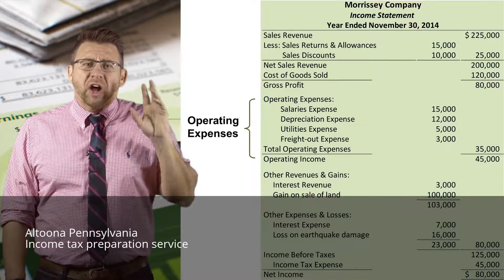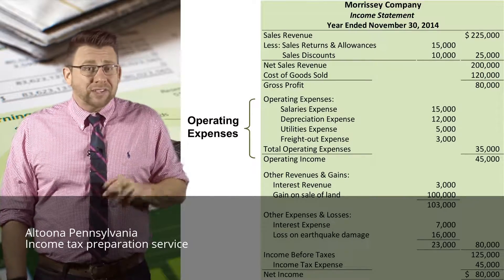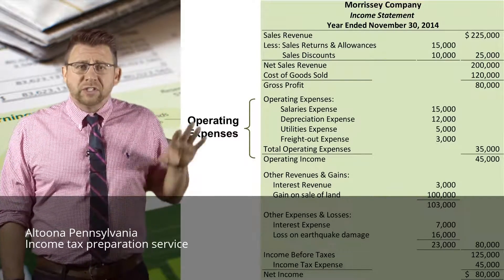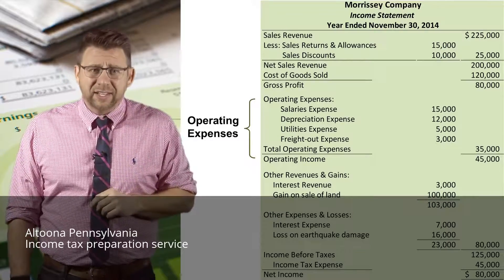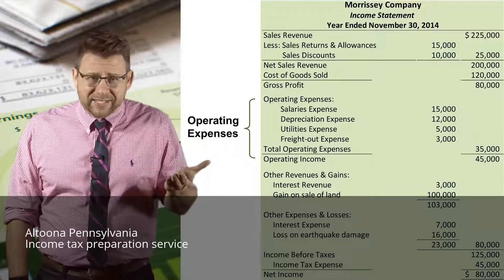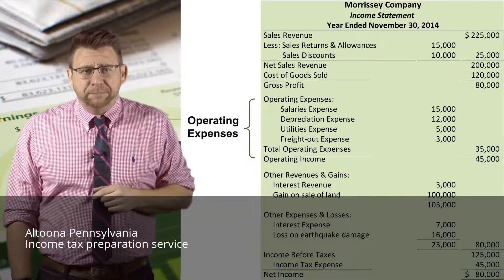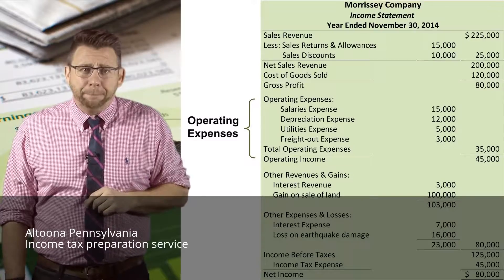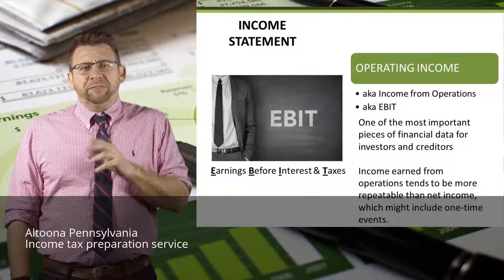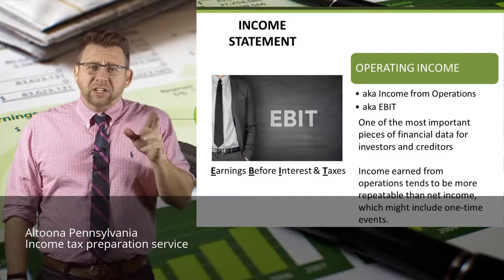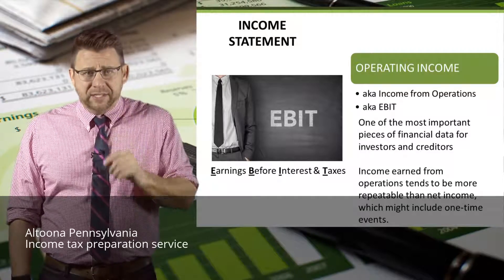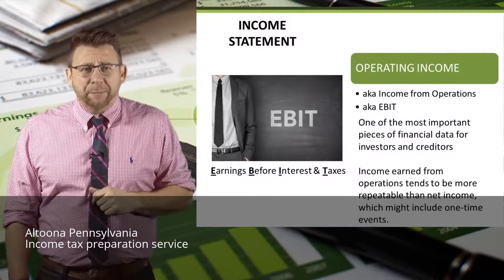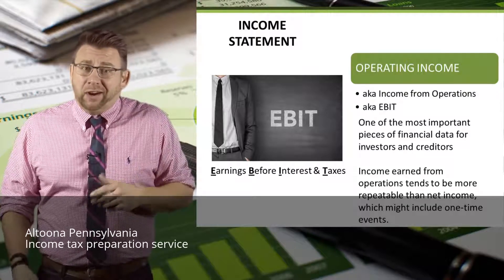The next section lists all of the operating expenses of a business. Not all expenses are listed here because not all expenses relate to operations. The most notable expense that doesn't belong in this section is interest expense, because interest expense relates to how a business finances its operations, not operates it. Operating expenses are deducted from gross profit to arrive at operating income, which is also known as income from operations or EBIT — earnings before interest and taxes. When we look back at the multi-step income statement, about the only things that remain are interest and taxes.